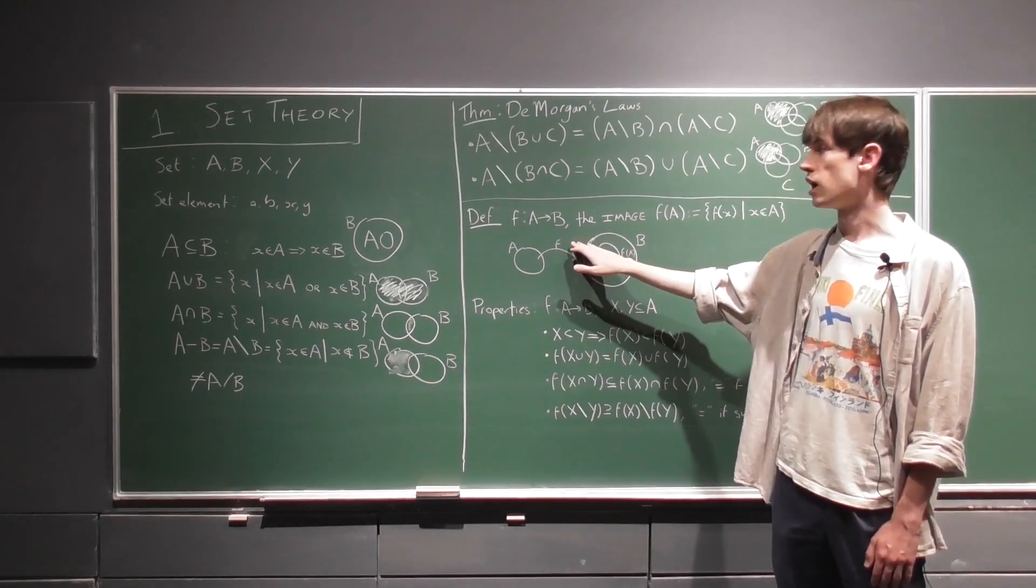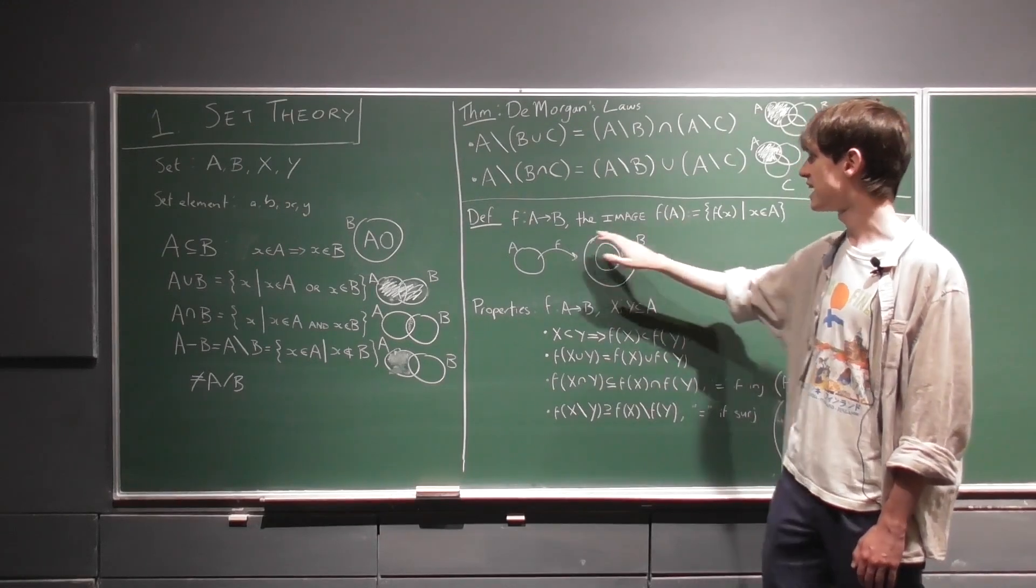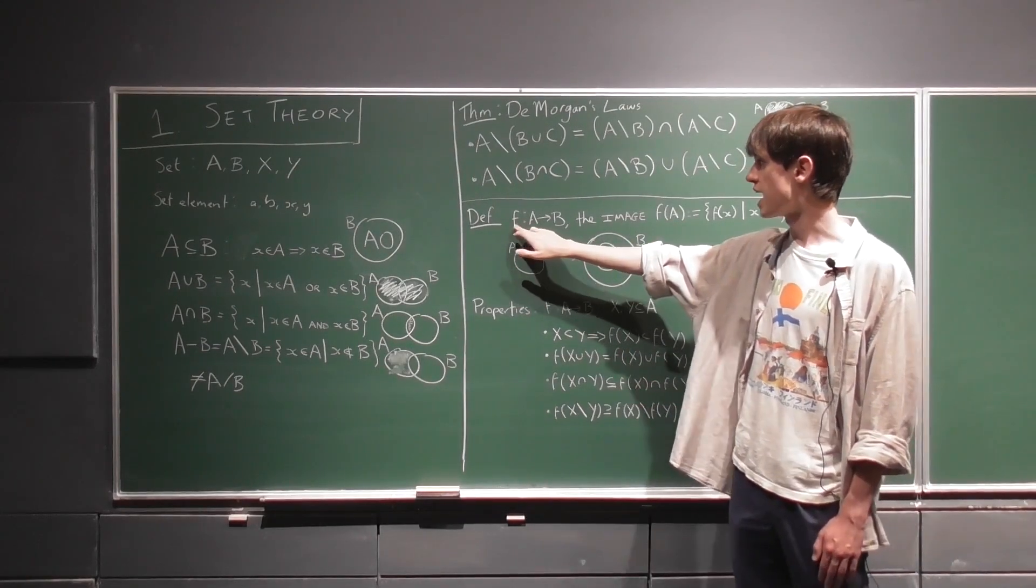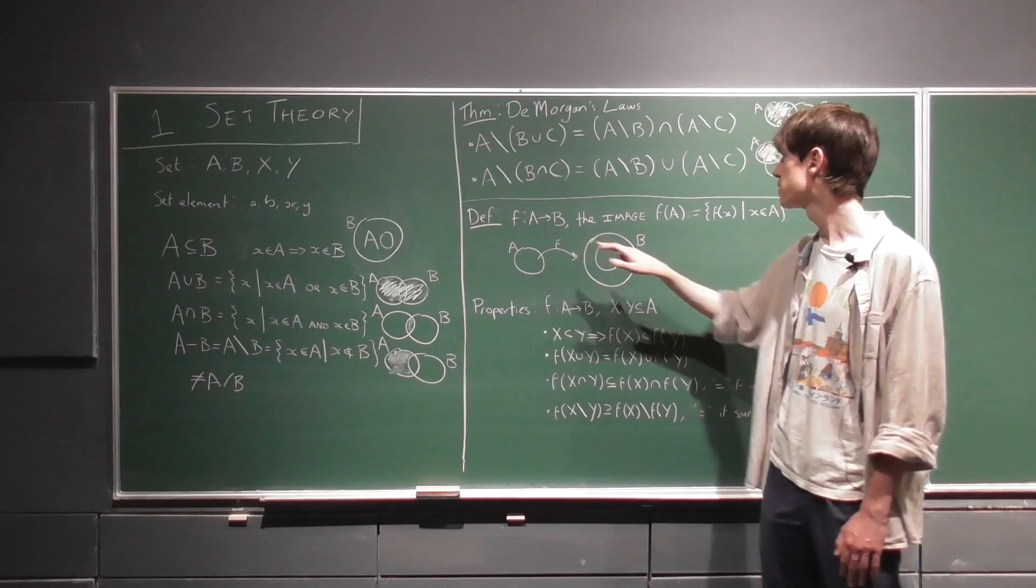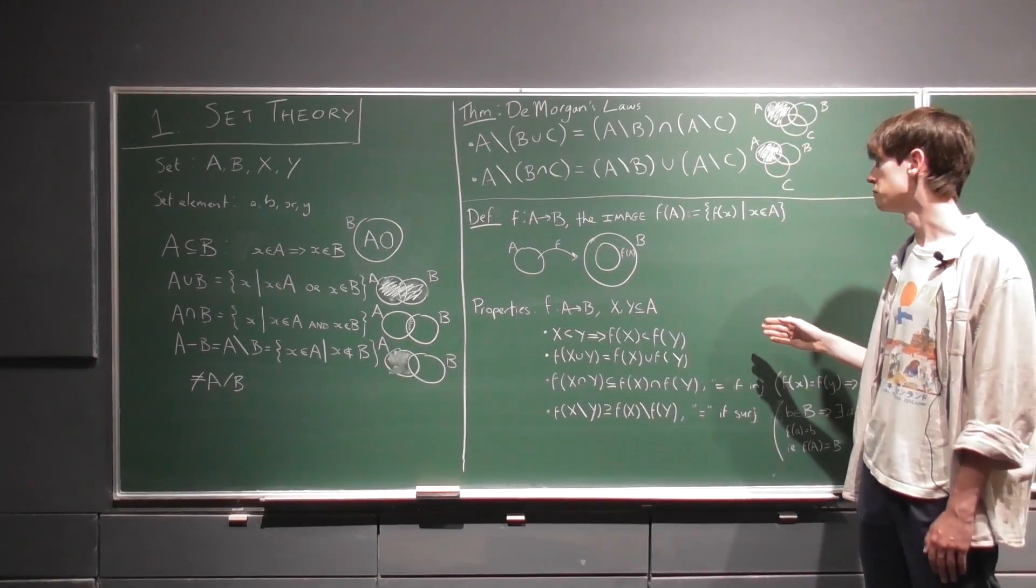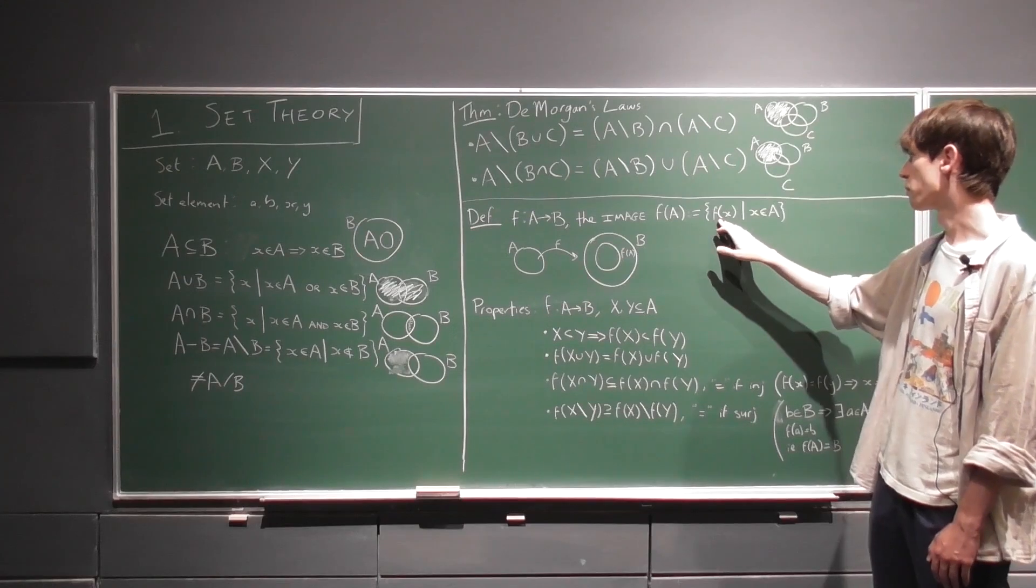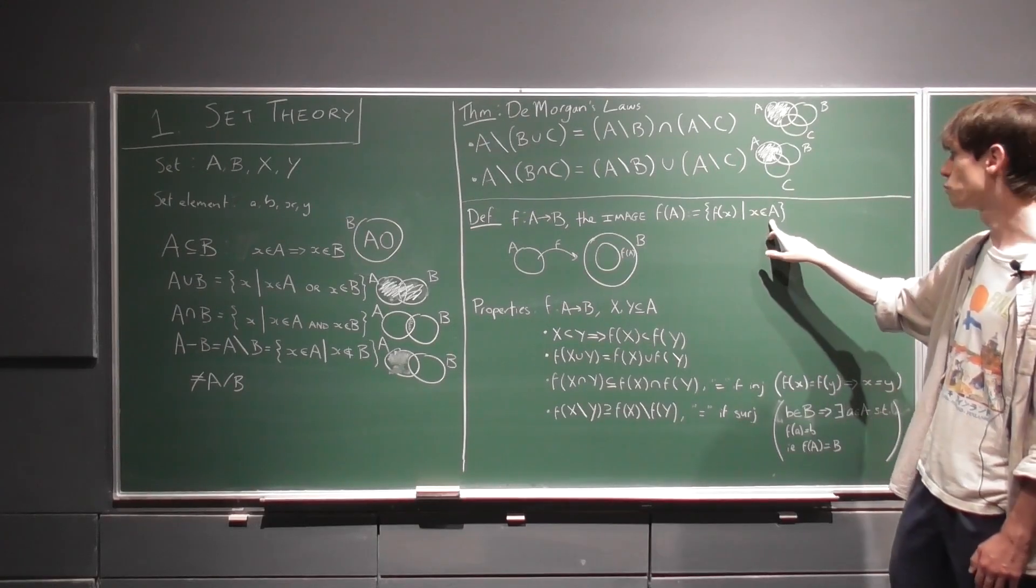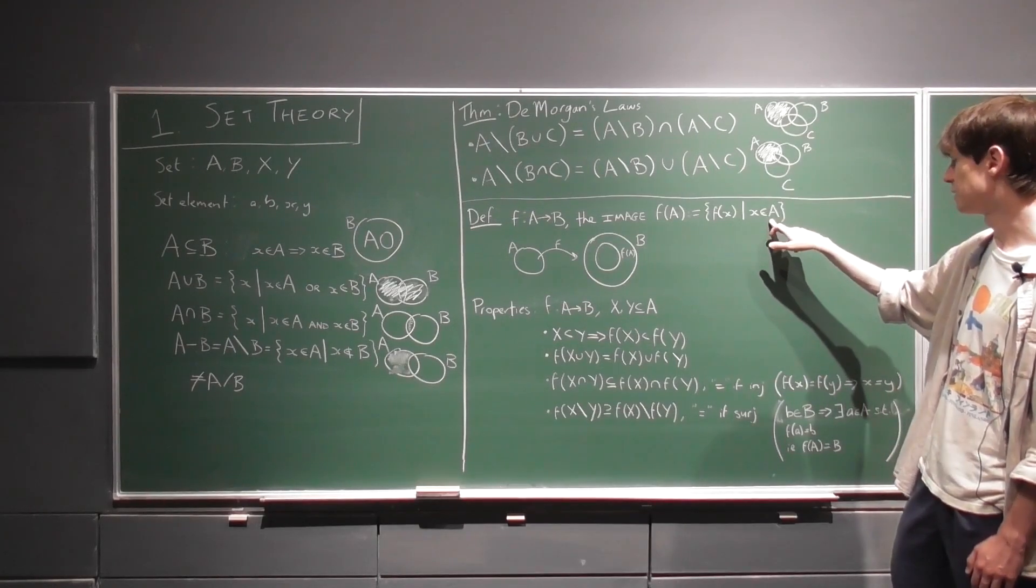Now the image of any set A under the function f, where f maps A to B, is defined as this set here. So it's all the elements in B that are of the form f of x, where x was an element of A.